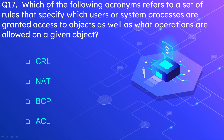Question number 17: Which of the following acronyms refers to a set of rules that specify which users or system processes are granted access to objects, as well as what operations are allowed on a given object? Options are CRL, NAT, BCP, and ACL. The correct option is ACL or access control list, which is used for giving permissions on specific objects inside devices.